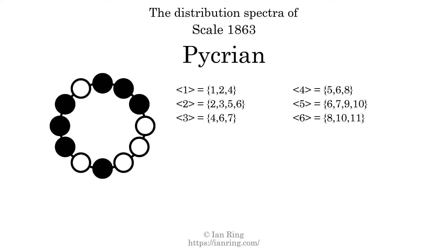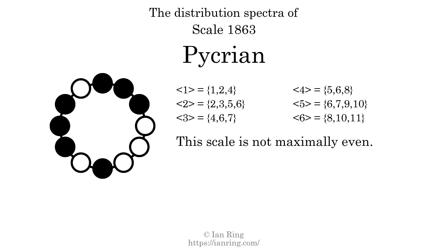The spectrum variation is the sum of all the widths, divided by the number of tones. The spectrum variation of this scale is 2.857. Since the variation is greater than 0, this indicates that the scale is not perfectly even. The highest spectrum width is 4. Since this is greater than 1, we know that this scale is not maximally even.